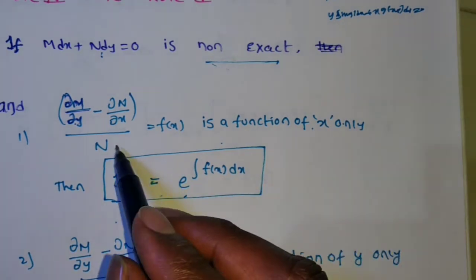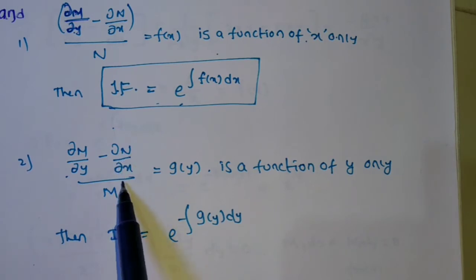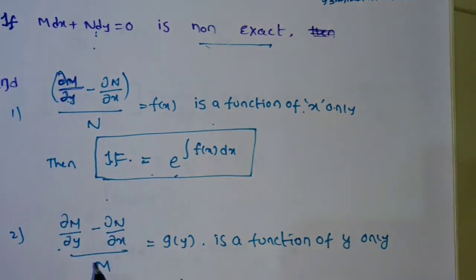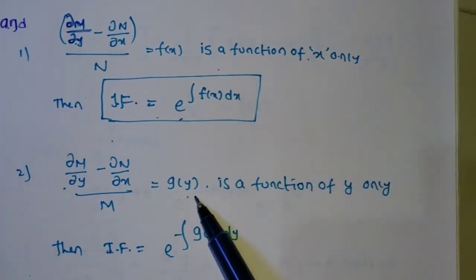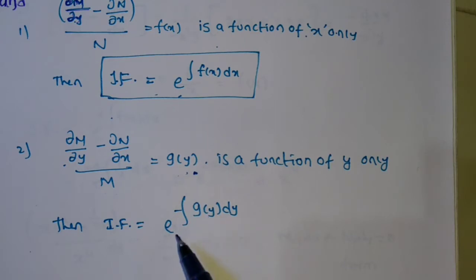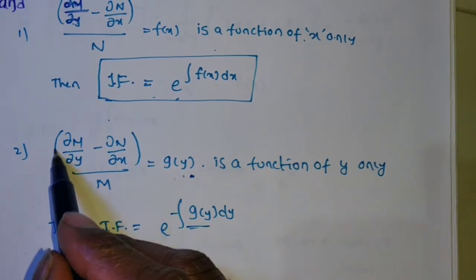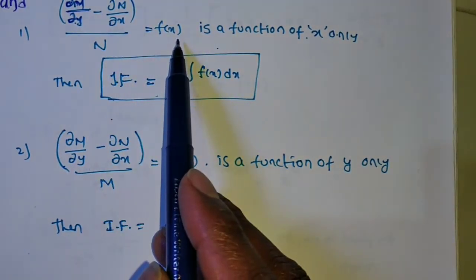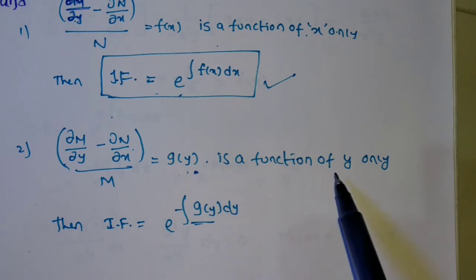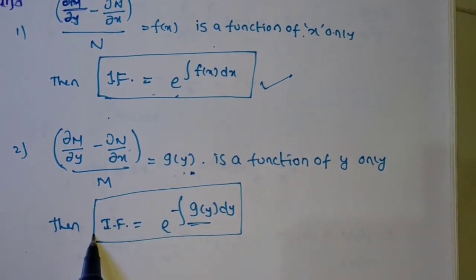That is Rule 4. For Rule 5: after finding ∂M/∂y minus ∂N/∂x, if dividing by N is not possible, check if dividing by M is possible. If dividing by M gives a function in terms of y alone, then the integrating factor is e to the power of integral of minus g(y) dy.